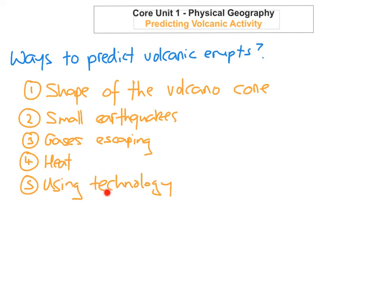Scientists also use lasers and tiltmeters to detect any changes in the volcano's dome — if the shape or heat is changing. Chemical sensors are also used to detect any gases or increased gases escaping near the crater, such as sulfur dioxide.